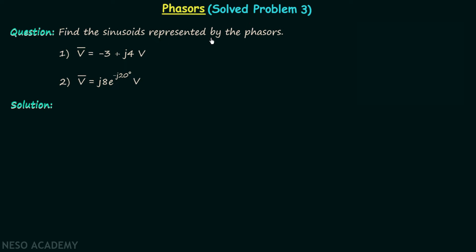Find the sinusoids represented by the phasors. Two phasors are given: the first phasor is V = -3 + j4 volts, represented in rectangular form of complex numbers. The second phasor is V = j8 * e^(-j20°) volts, represented in exponential form of complex numbers.